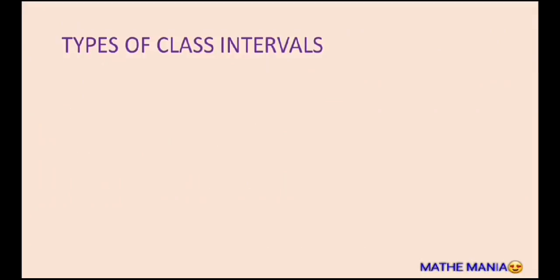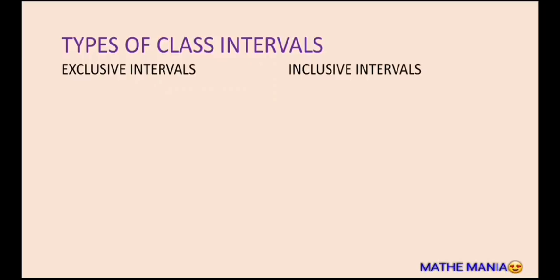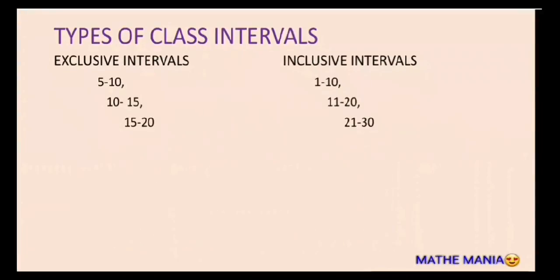There are two types of class intervals: exclusive and inclusive intervals. In exclusive intervals, the upper limits are not included in the intervals — so 10 will not be included in 5 to 10 but will be included in 10 to 15. Whereas in inclusive intervals, both numbers are included in the same interval — 1 is included in 1 to 10, and 10 is also included in 1 to 10.